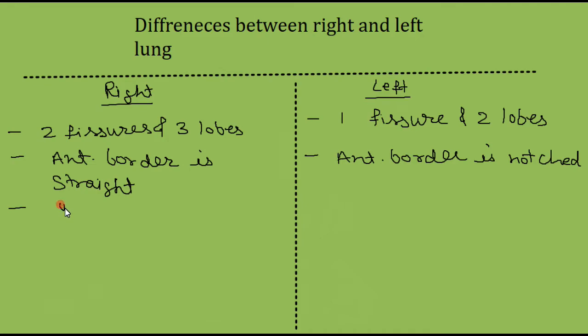The right lung is heavier than the left lung, with a weight of about 700 grams. On the left side, the weight is less, about 600 grams.